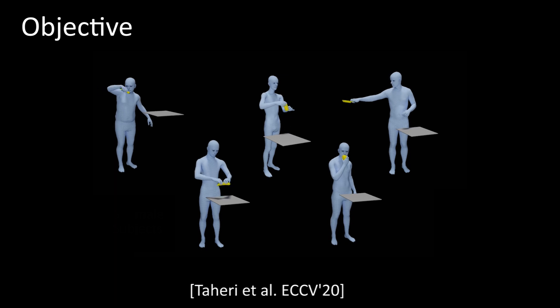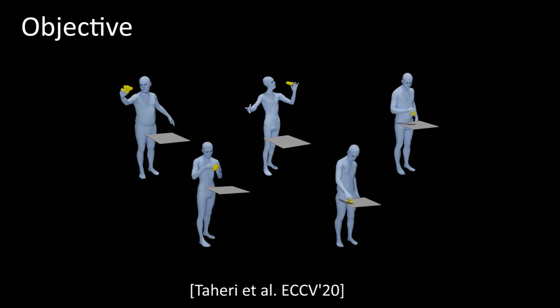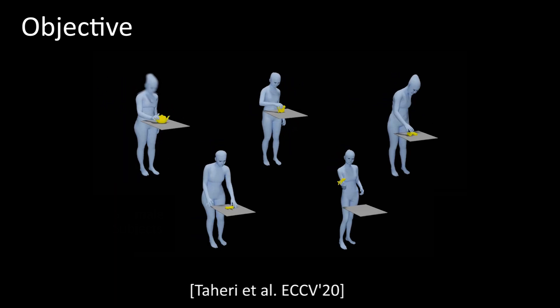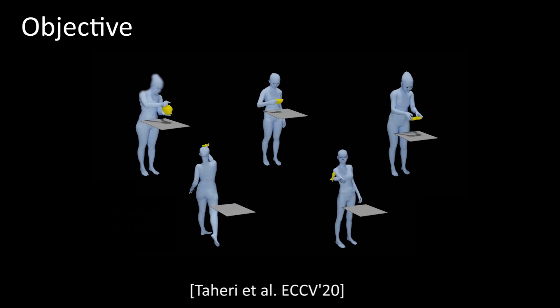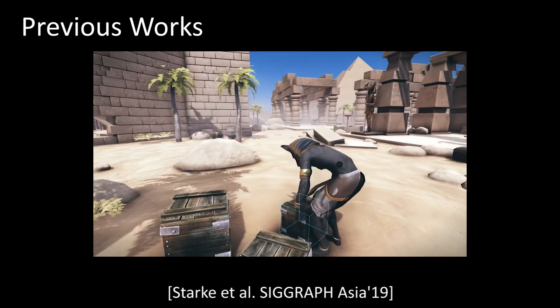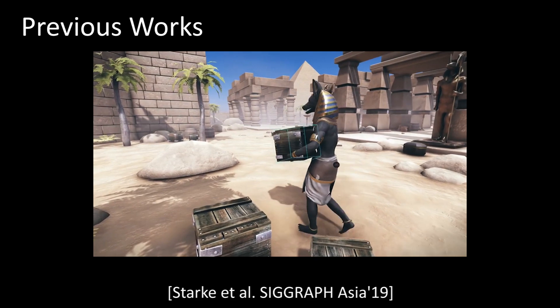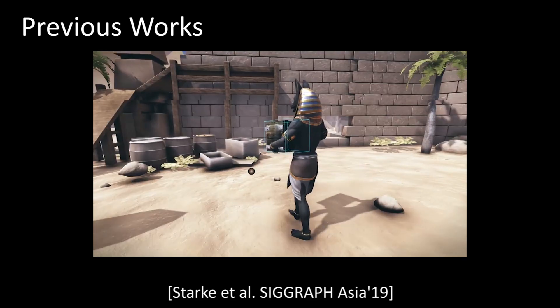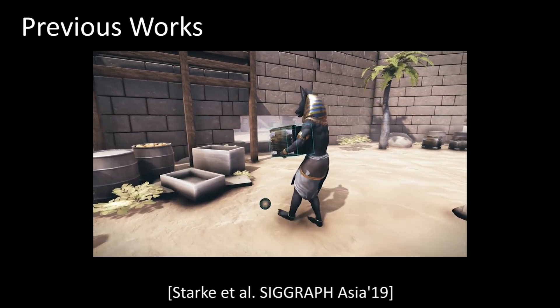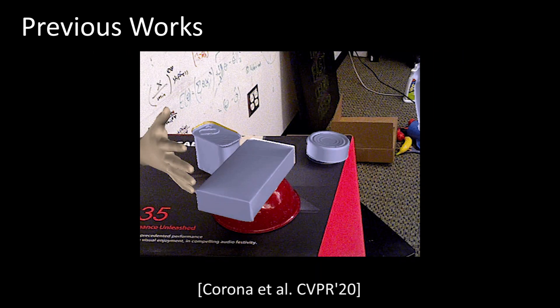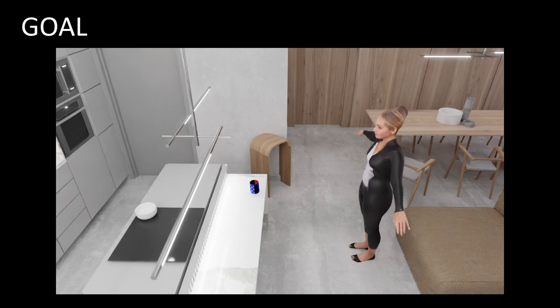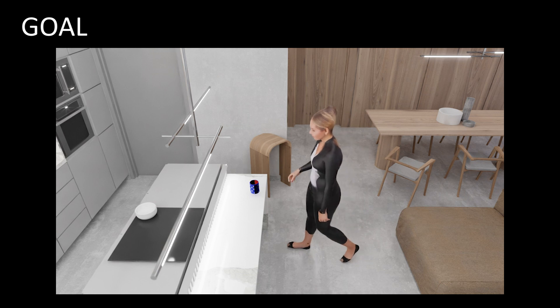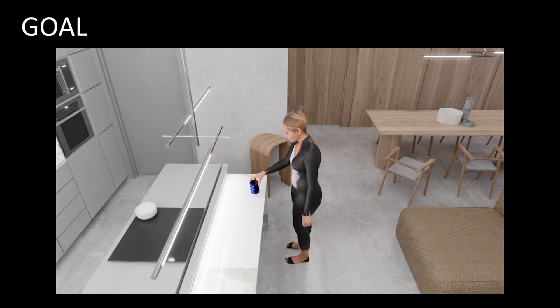Our goal is to generate novel motions of the full body such that it interacts with 3D objects realistically. Some existing methods go in this direction. However, they focus on the major limbs of the body, ignoring the hands and the head. Other methods focus on hands alone. Our method, named GOAL, addresses this problem for the first time.